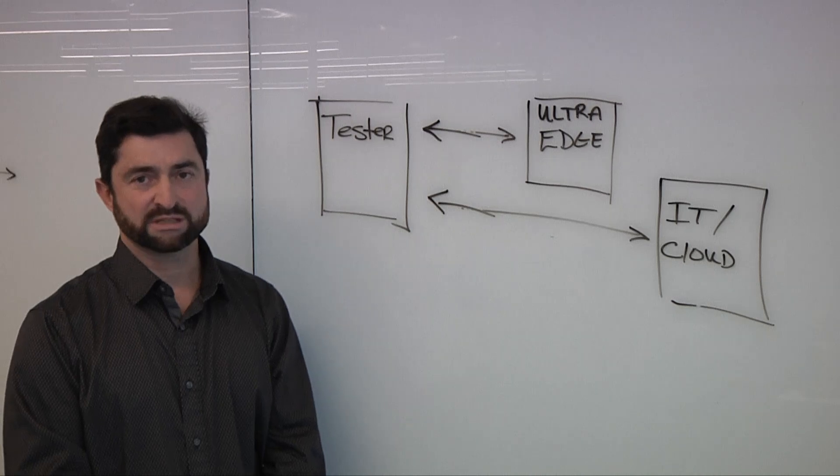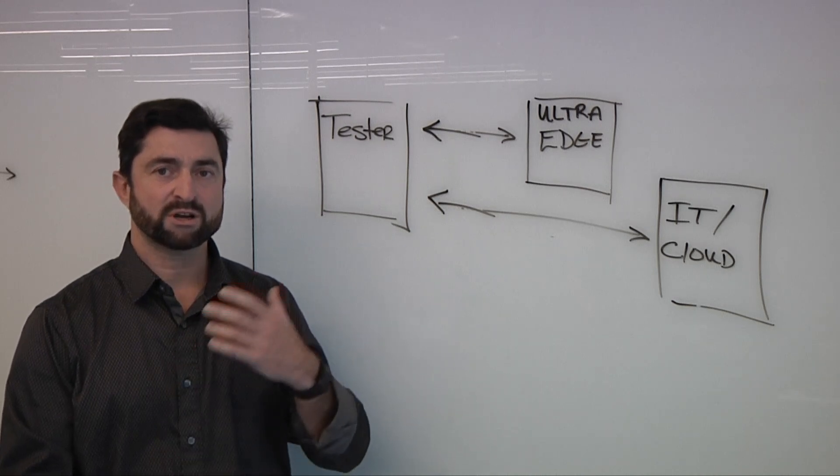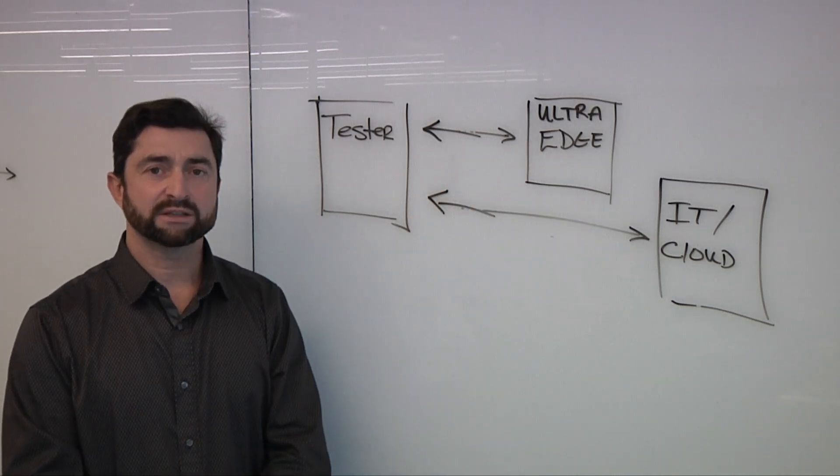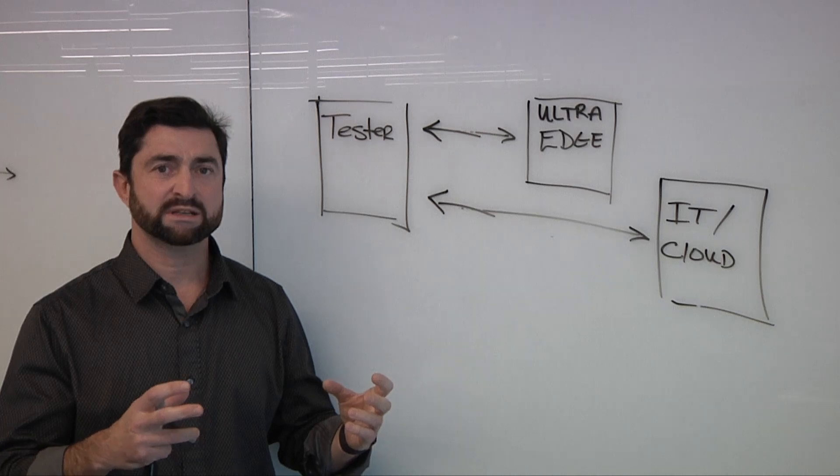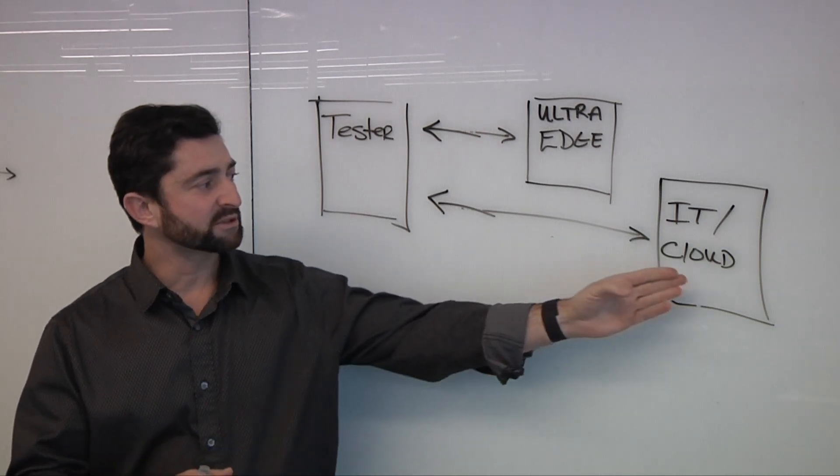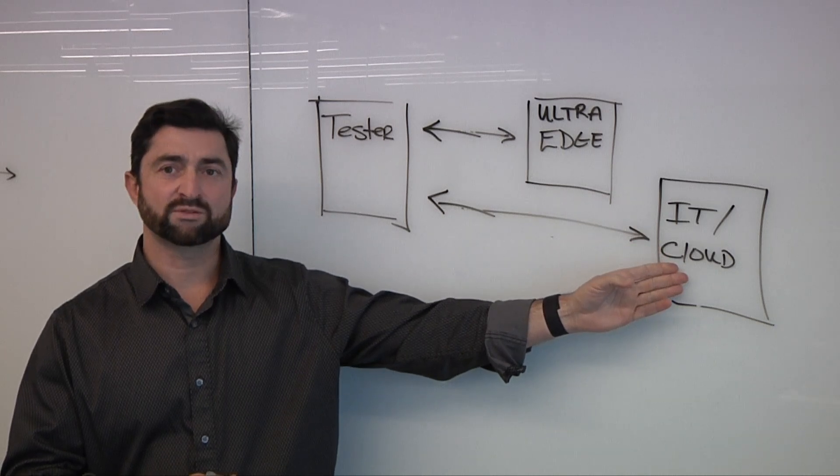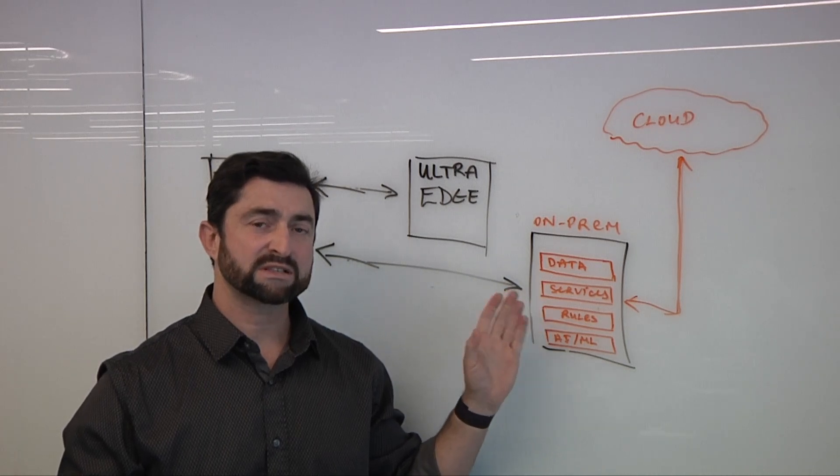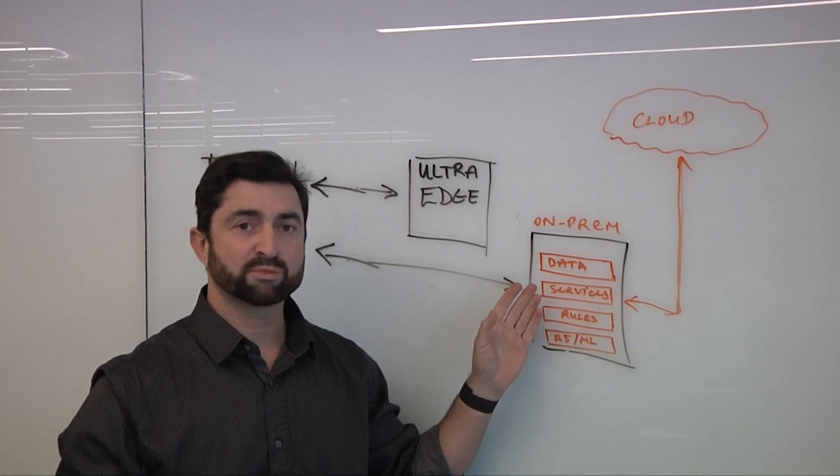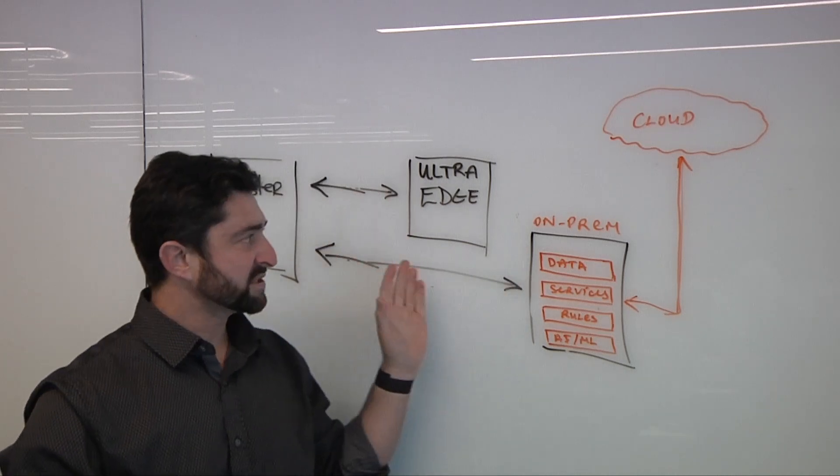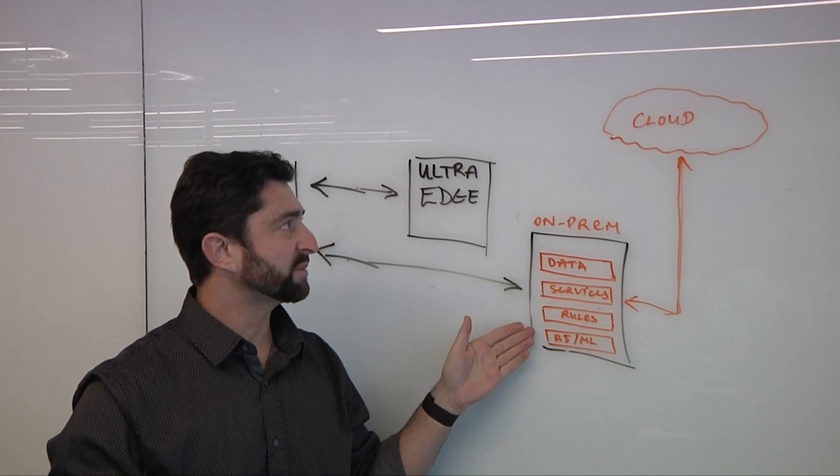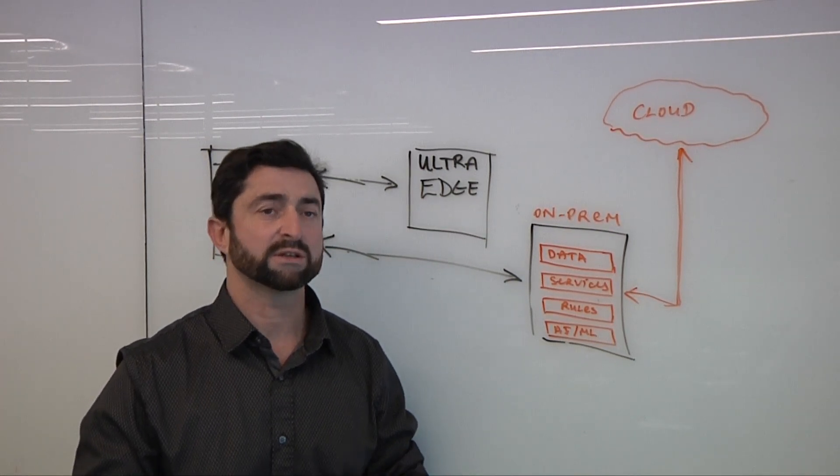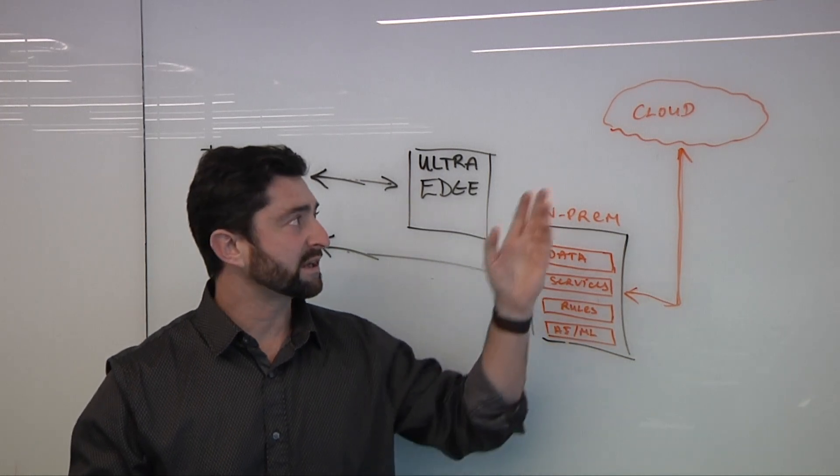And there are two layers to that solution. One layer is the inference of how you run the model, and that's basically split between the cloud and the UltraEdge box. The other layer is how you build those models and where you do the processing. And that layer is split now in terms of your IT cloud between on-prem server and the cloud. So the test floor will typically have an on-prem server that will have some partition in each one of those areas, whether it's data, services, rules, or AI ML model, a certain partition between the on-prem server and the things that we do in the cloud.